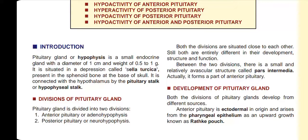Hormones are going to be worth 2 marks. The pituitary gland is also called hypophysis. It is a small endocrine gland. The diameter is 1 cm and the weight is 0.5 to 1 gram.